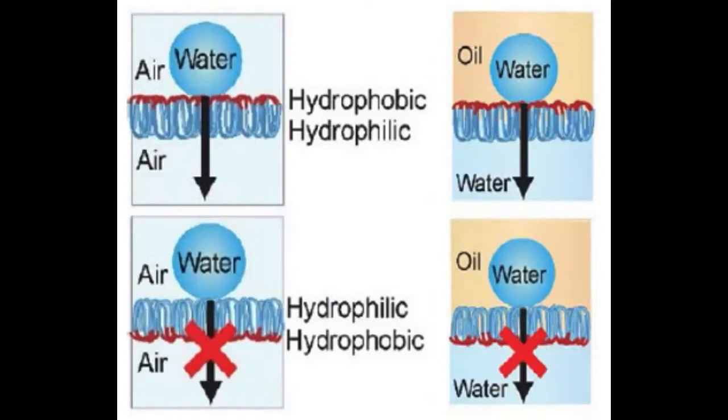Janus membranes work by having two faces with opposite surface properties. One side of the membrane is made using zinc oxide nanowires that have been treated with a hydrocarbon to become super hydrophobic, and one side is made using nanowires that are left naturally hydrophilic. This difference in wettability facilitates a unidirectional movement of water from the hydrophobic side to the hydrophilic side, but water cannot pass in the other direction.